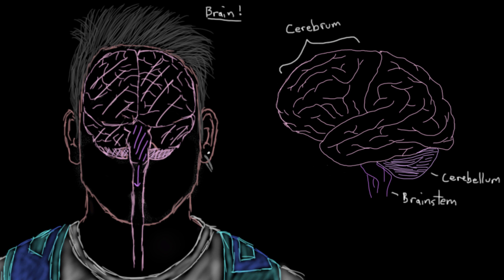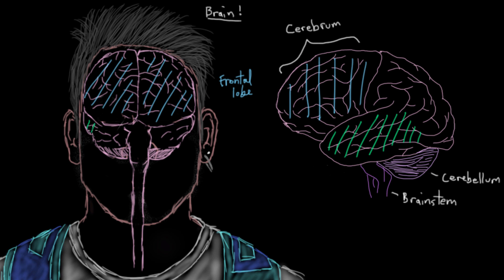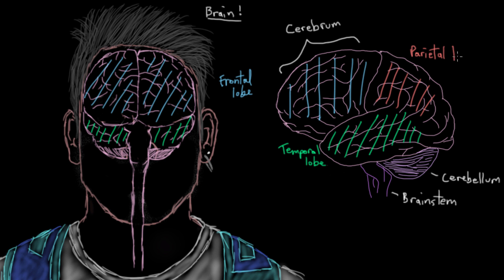Now let's further subdivide the cerebrum into its component lobes. We have our frontal lobe here in light blue, which is the main lobe involved in consciousness and thinking. We have our temporal lobe here in green, which helps you with your sense of smell and your sense of sound. You have your parietal lobe here in red, which is really important in helping you feel stimuli like pain, touch, and vibration. And you have your occipital lobe in yellow, which is really important for your sense of sight.